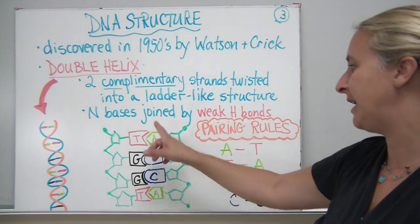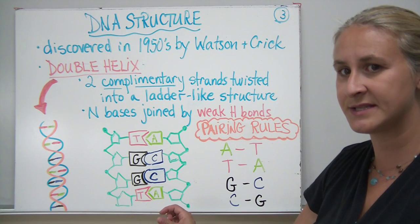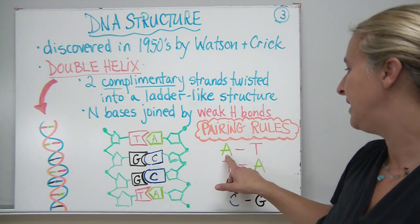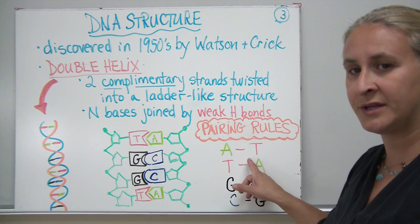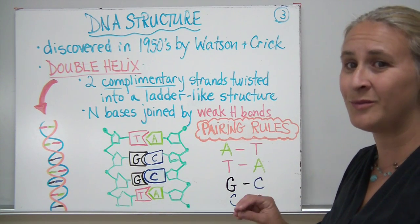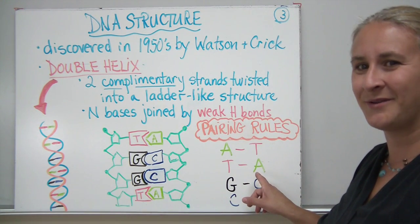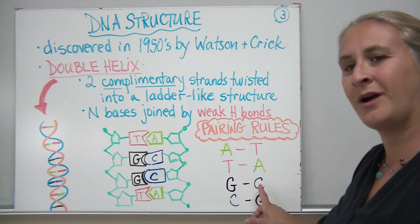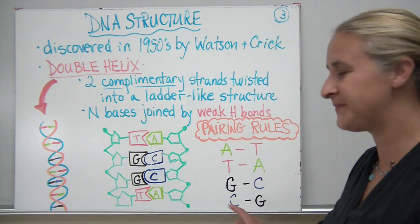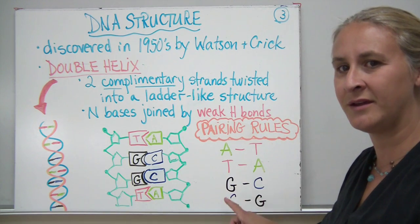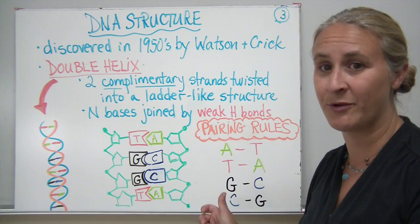The base pairing rules for DNA — for the center portion where two nitrogenous bases come together — are as follows: if there is an A on one side, the complementary strand would have a T pairing with it, almost like a piece of a puzzle. If there's a T, the opposite side would have an A. A G will always pair with a C, and a C will always have a G opposite it. So: A with T, T with A, G with C, and C with G. Those you're going to want to commit to memory.